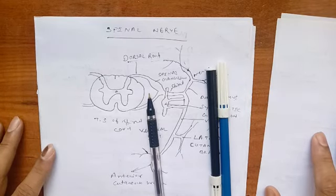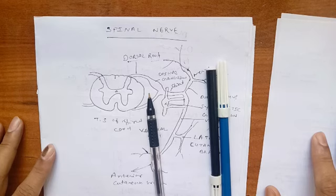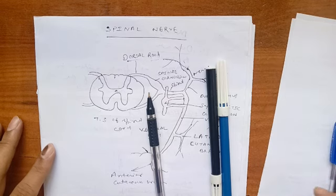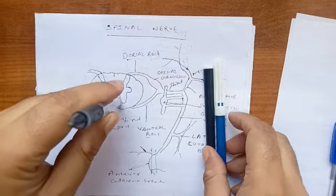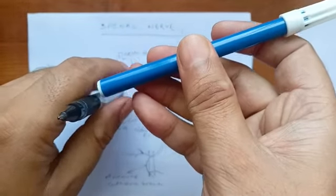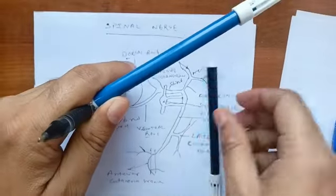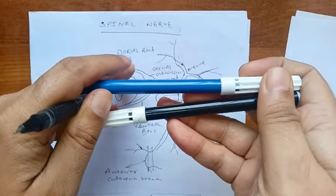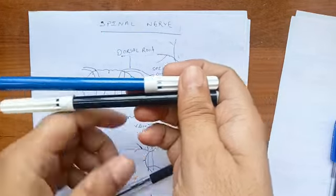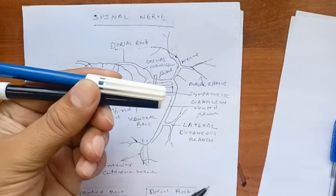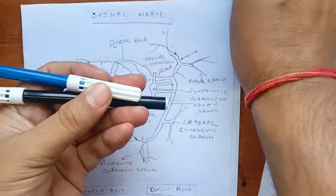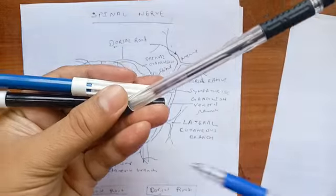Hello everyone. In the previous section I discussed the spinal nerve, the afferent fiber and the efferent fiber — what are the afferent and efferent fibers. There are 31 pairs of spinal nerves, which are peripheral nerves. From the spinal cord, the ventral root and dorsal root arise and they combine to form the spinal nerve. From the spinal nerve, the ventral ramus and the dorsal ramus arise.